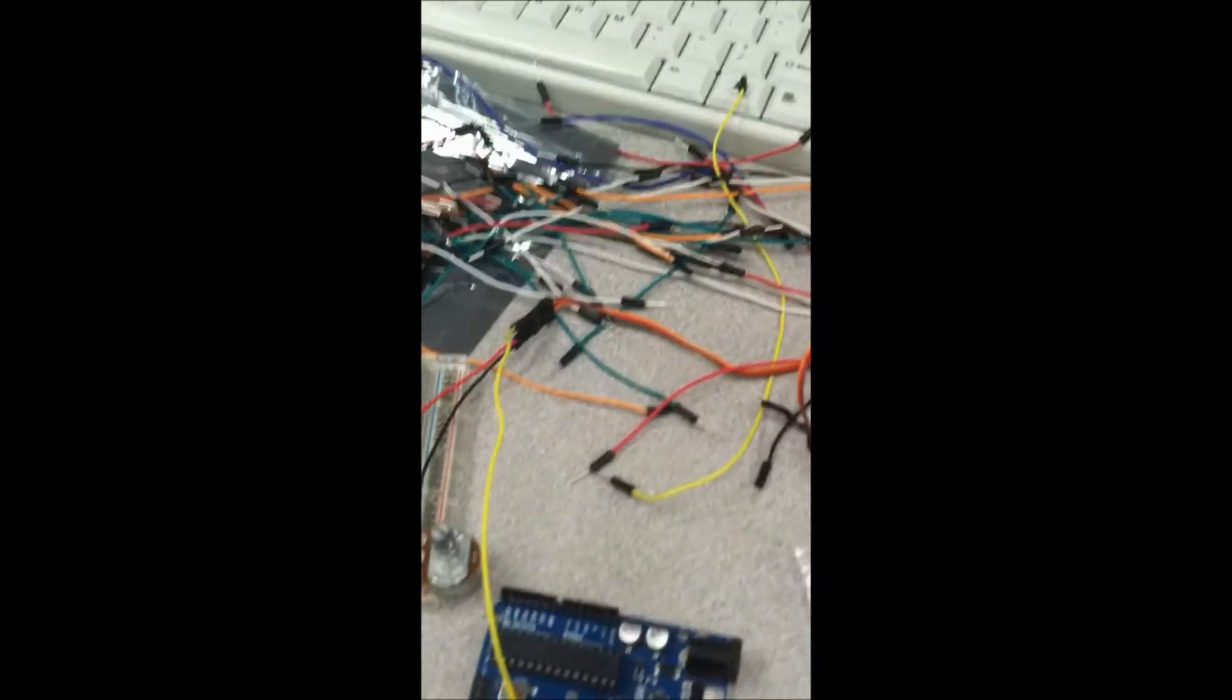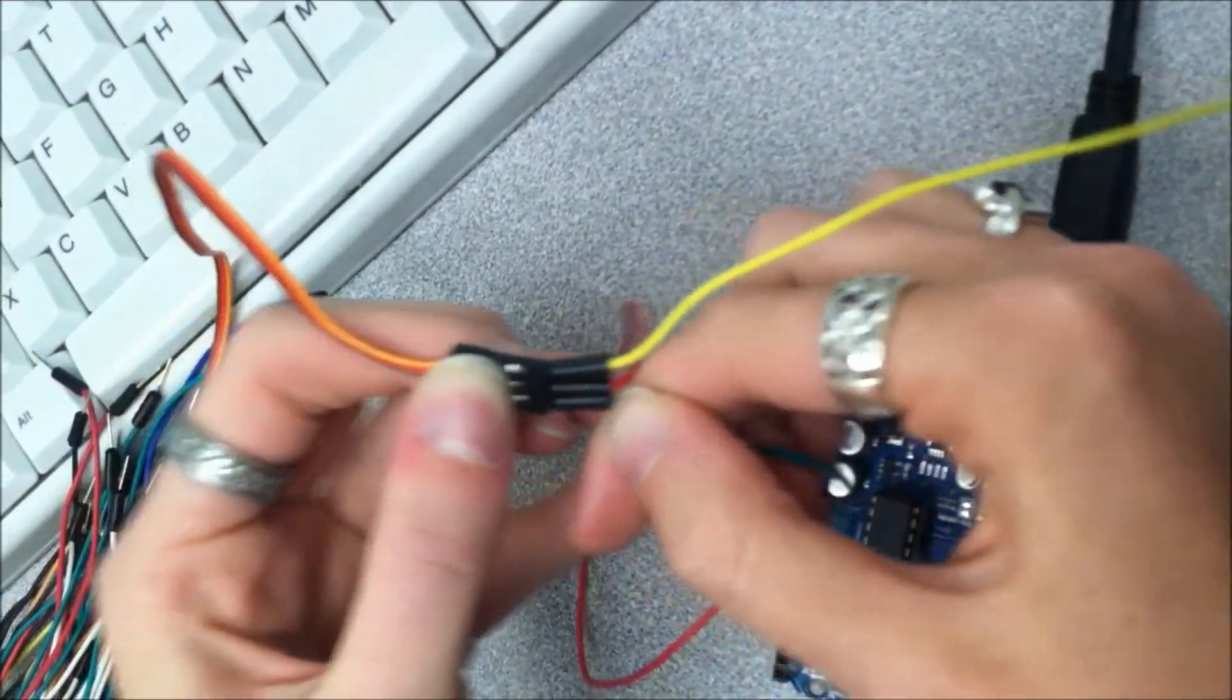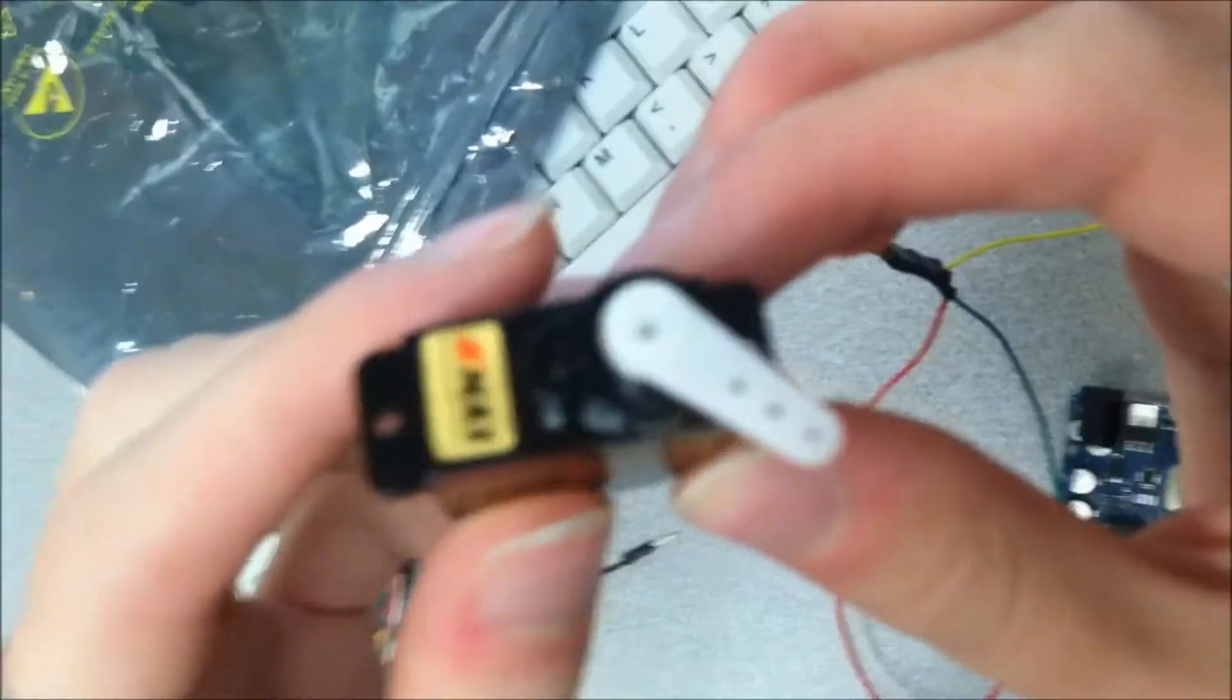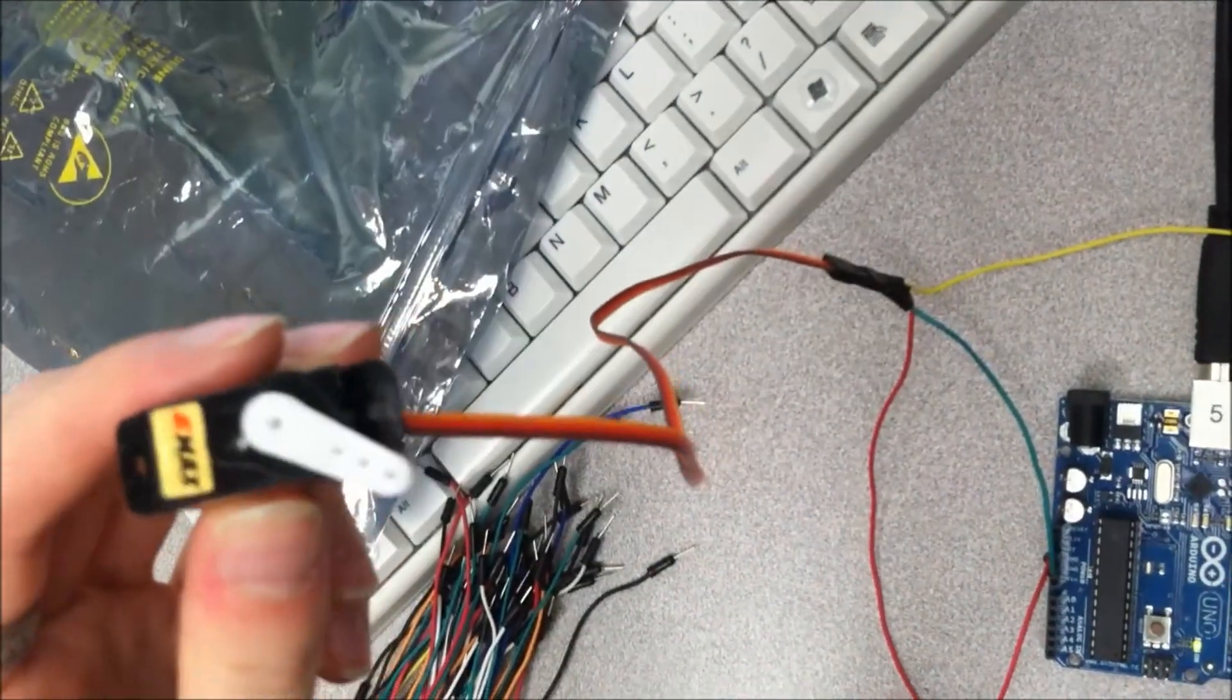So this is the servo motor sweep. I'm gonna be building that. And then put that in there. Woohoo! Look, now it's sweeping just like it should be.